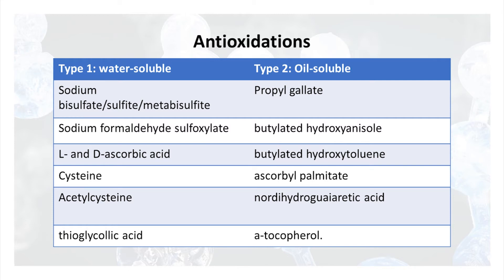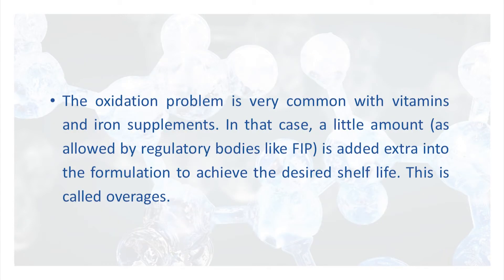Water-soluble type 1 antioxidants include sodium bisulphite, bisulphate, metabisulphite, thiosulphate, and sodium formaldehyde. Oil-soluble type 2 antioxidants include propyl gallate (PG), butylated hydroxyanisole (BHA), and butylated hydroxytoluene (BHT). Please learn these examples. The oxidation problem is very common with vitamins and iron supplements. In such cases, a little extra amount — as allowed by regulatory agencies like FIP — is added to the formulation to achieve the desired shelf life; this is called overages.